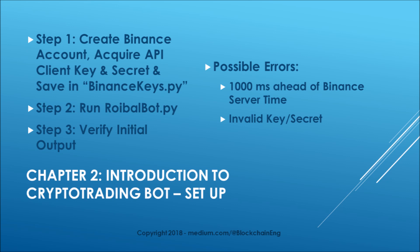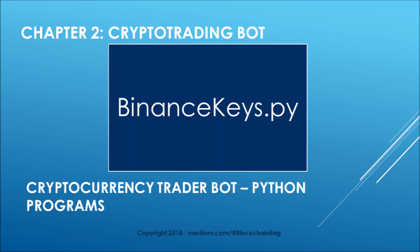You will be able to see the outputs and verify they are similar to what we're discussing in this video. There are a couple of possible errors to look out for: if your computer time is off from the Binance server you'll get a thousand-millisecond error, or the possibility of invalid keys. The binancekeys.py is a very simple program — just a few lines — where you save your API key and secret, which will be retrieved by rooiball.py.